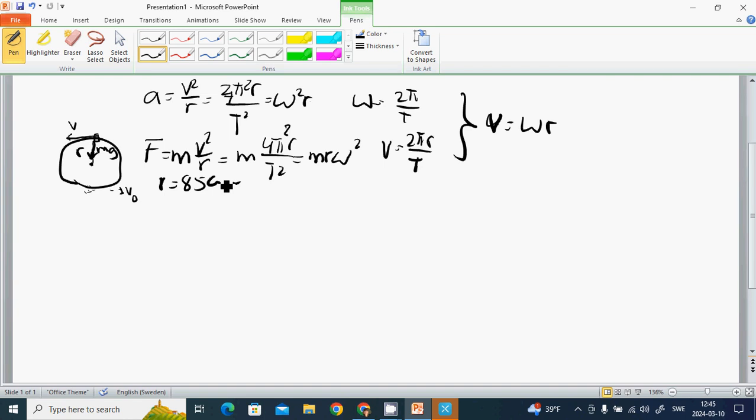We want to know what is V0, the minimum velocity when it goes in a circular path. We know that F equals mg equals mv²/r, so V equals the square root of rg.